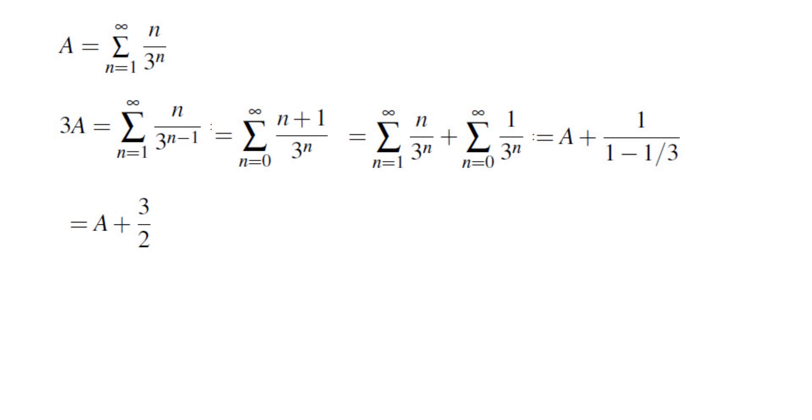So what we get is 3A is A plus 3 halves. Simplifying we get 2A equals 3 halves, which means A is 3 fourths.